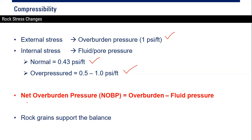We also have the net overburden pressure, which is calculated by subtracting the fluid pressure — also known as pore pressure or reservoir pressure — from the overburden pressure. The rock matrix or rock grains support the balance so that there will be no subsidence.